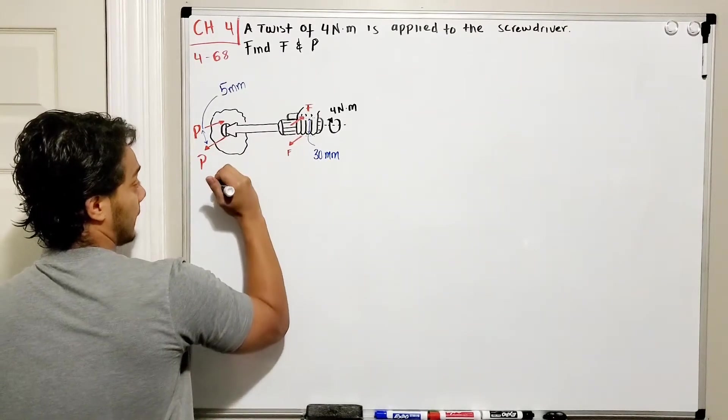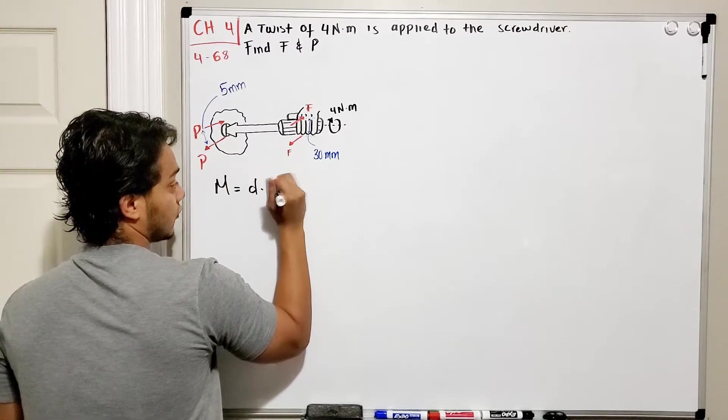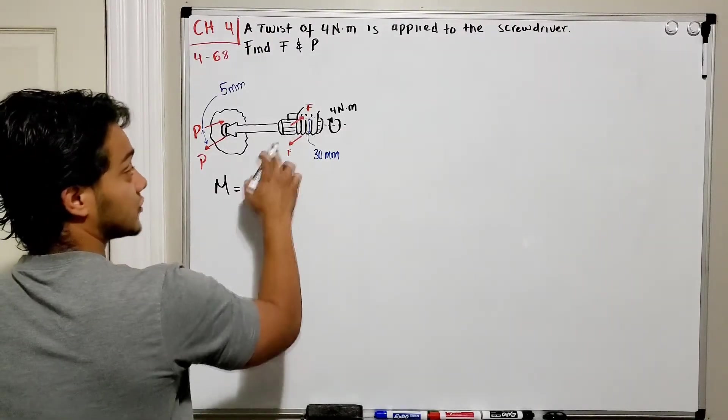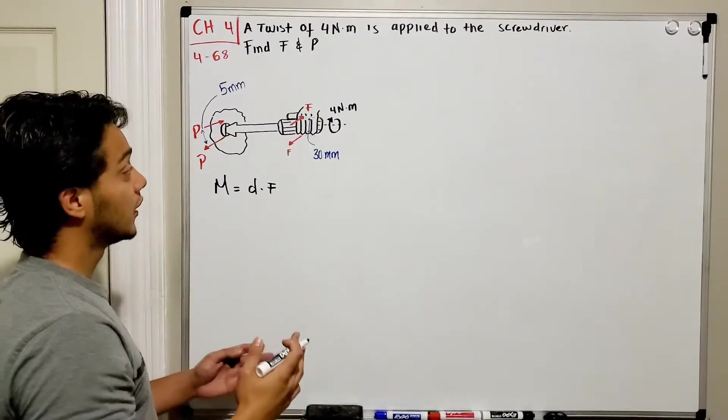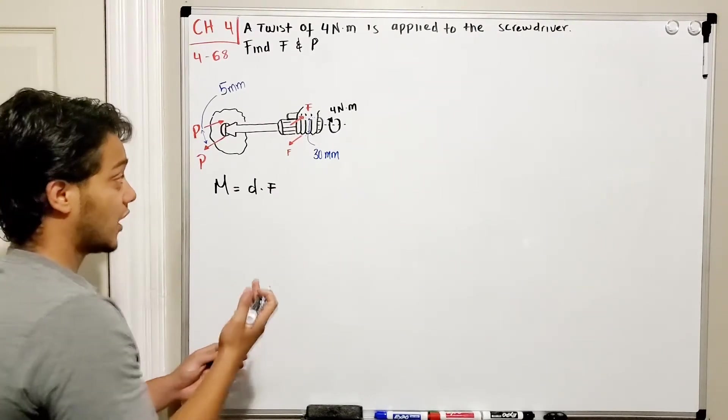We know that the moment is equal to distance times force. So what happens when I have two forces that are the same magnitude and opposite to each other? Basically what's going to happen is the moment is going to be defined by the difference between the two forces multiplied by its magnitude.